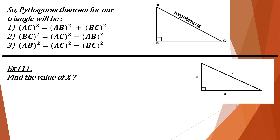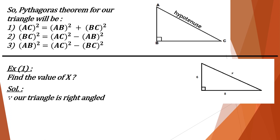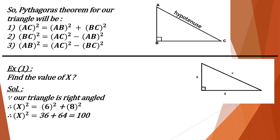Example 1: Find the value of X. X here is the hypotenuse. Solution: Since our triangle is right-angled, X² = 6² + 8². Therefore, X² = 36 + 64 = 100. Therefore, the length of X = √100 = 10 cm.